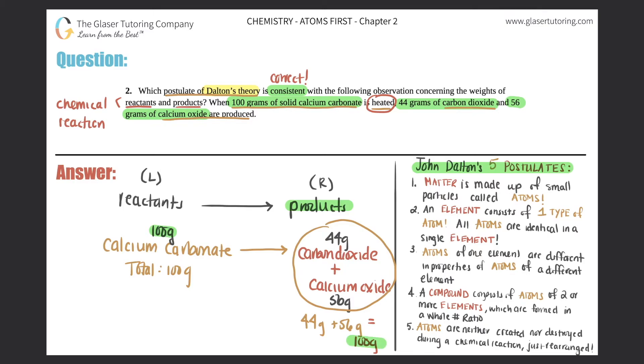So we have a reaction and the mass, the amount of matter on the left side on the reactants and on the right side are equal. So which postulate talks about this idea? It is the fifth one.